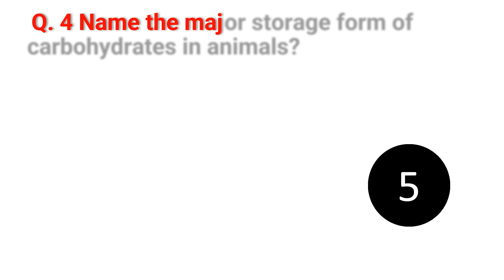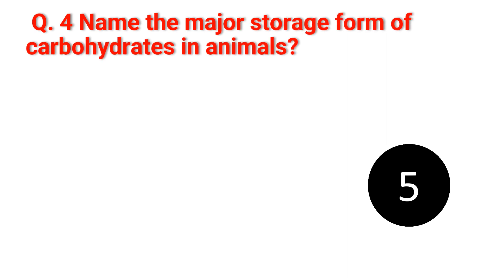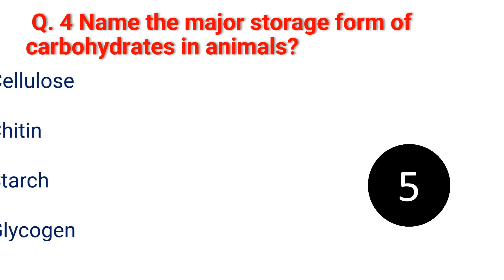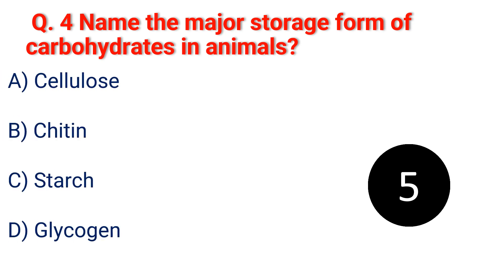Question 4. Name the mature storage form of carbohydrate in animals. A. Cellulose. B. Chitin. C. Starch. D. Glycogen.